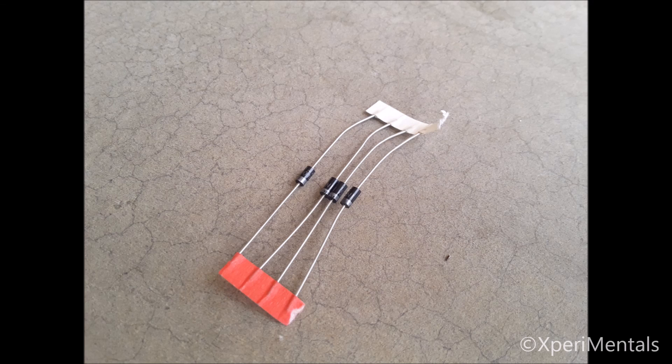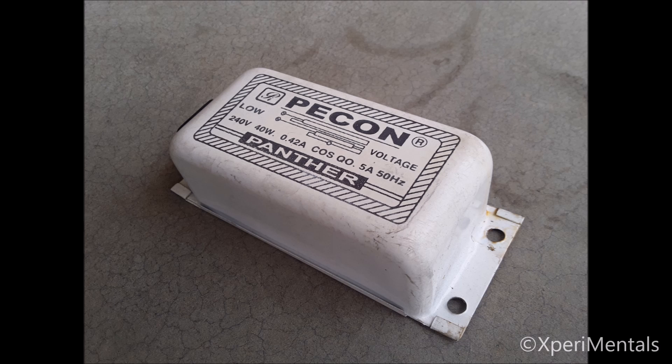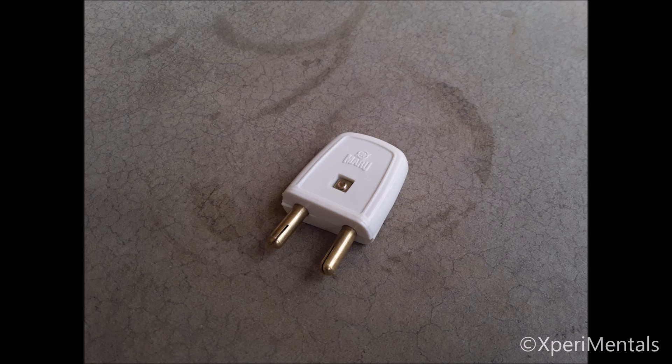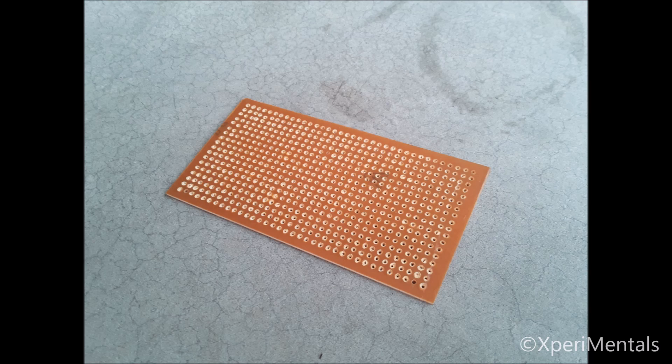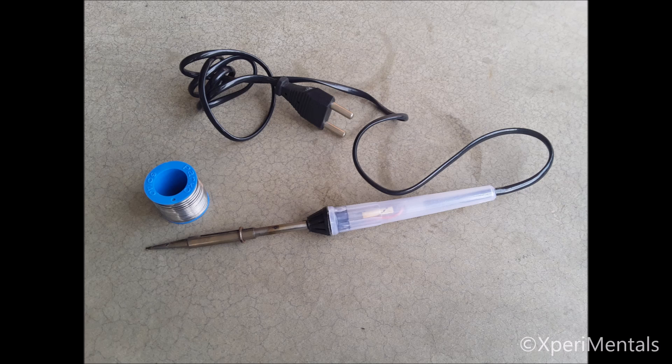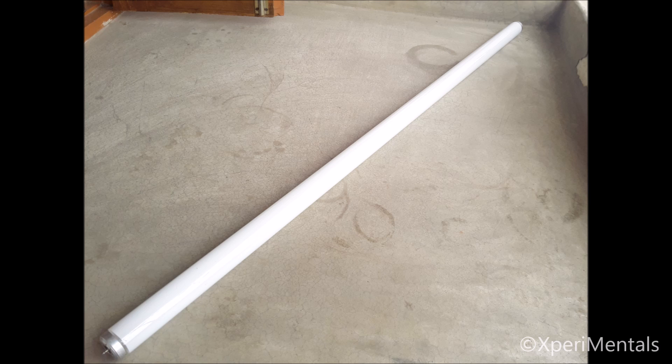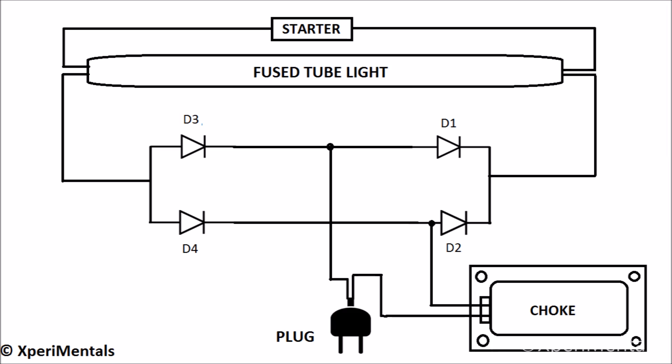Hello guys, how are you? Today we are going to show you how to reuse any fused tube light with a very simple circuit. Let's have a look at the needed components: four IN4007 diodes, starter choke, plug, circuit board, screwdriver, soldering equipment, wires, a fused tube, and this is the circuit diagram.